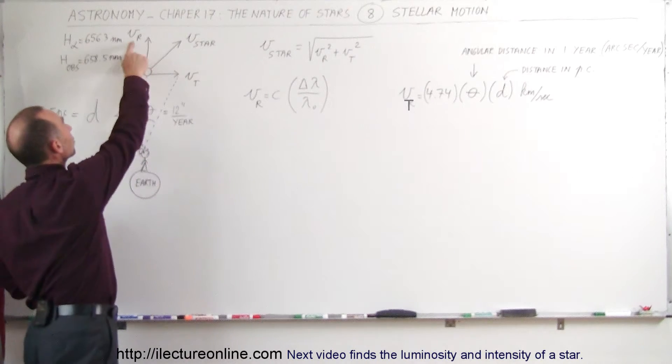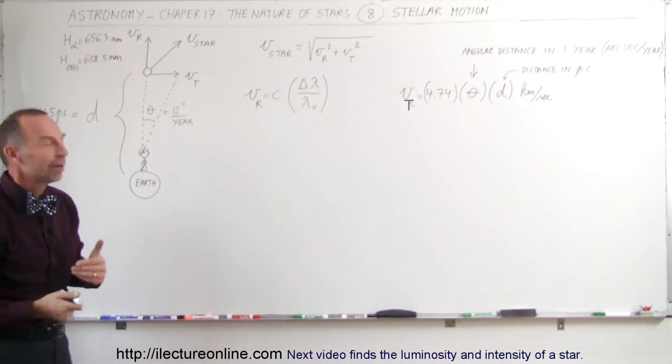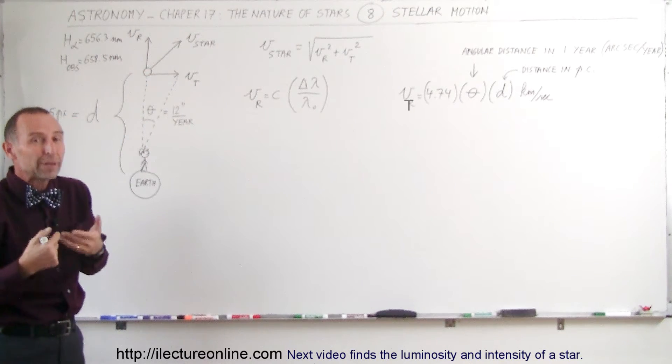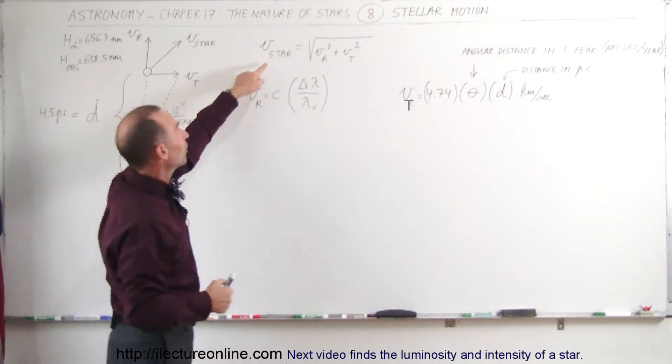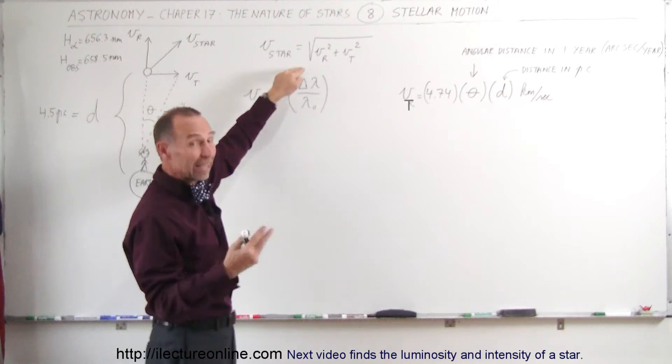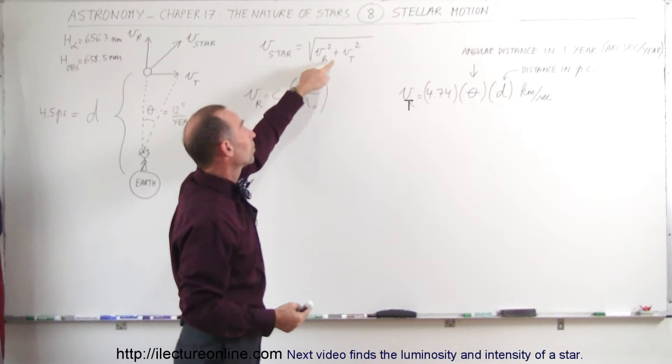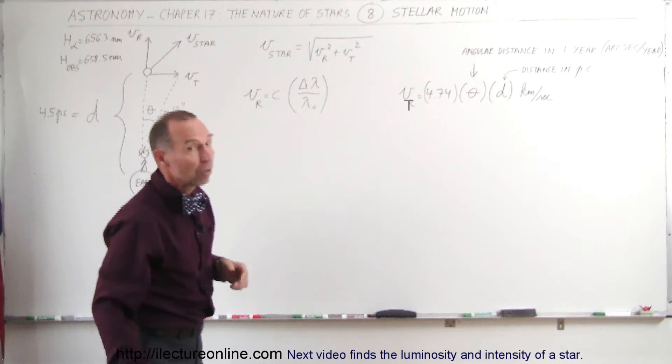So we call this the radial velocity, we call this the tangential velocity. That's why we use V sub R and V sub T for radial and tangential. Now what we need to do is, we need to be able to figure out what each of those two velocities is. Once we do, the velocity of the star can be found using Pythagorean theorem, equal to the square root of the vertical component squared plus the horizontal component squared, the radial component and the tangential component.